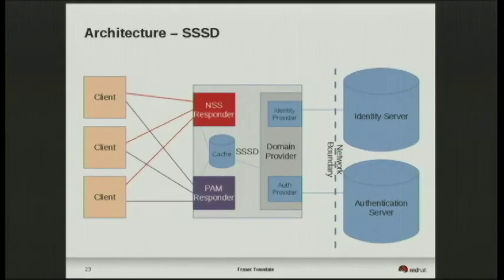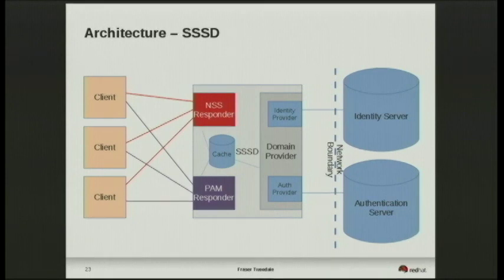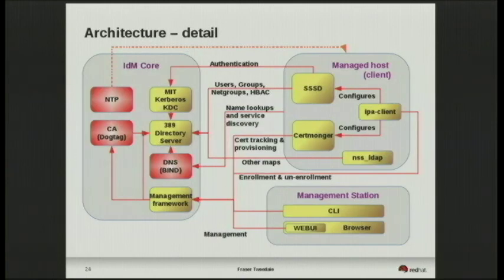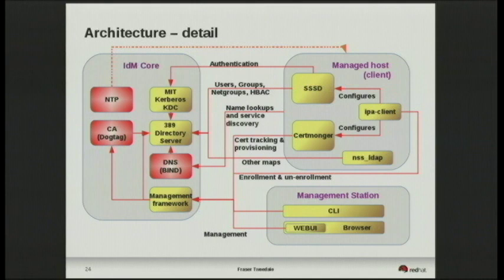In the SSSD architecture there are PAM and NSS responders. Clients are programs running on the host using the facilities PAM and NSS provide. There's a cache, and a domain provider with identity and authentication providers connecting across the network to FreeIPA, Active Directory, or both — since SSSD can support multiple identity stores. The detailed diagram shows the FreeIPA server with KDC, directory server, Bind for DNS, and Dogtag PKI. A host has SSSD, Certmonger for certificate provisioning and renewal, and IPA client commands. A management station uses the CLI, web UI, or RPC APIs.